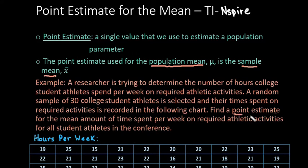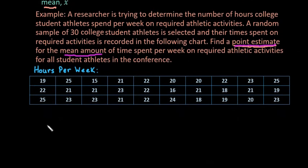So when it says find a point estimate for the mean amount of time spent per week on required athletic activities for all student athletes in the conference, all that is telling you to do is to find the sample mean.